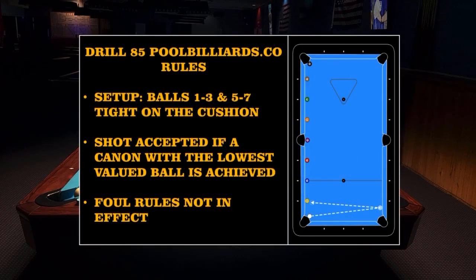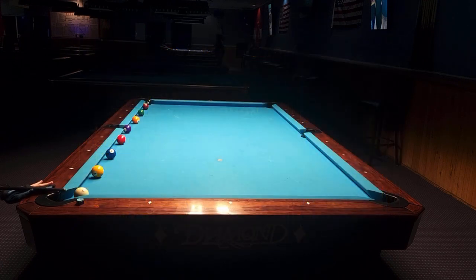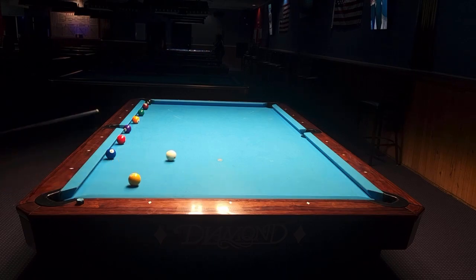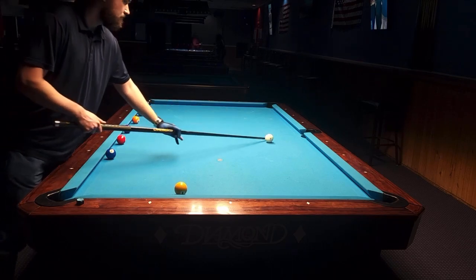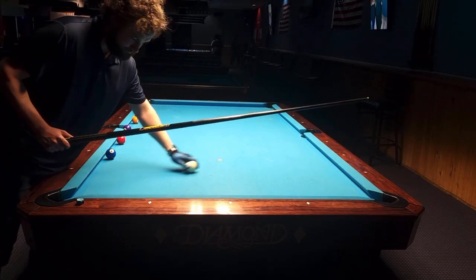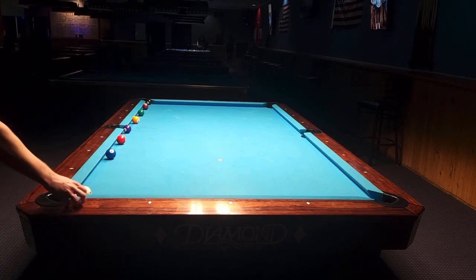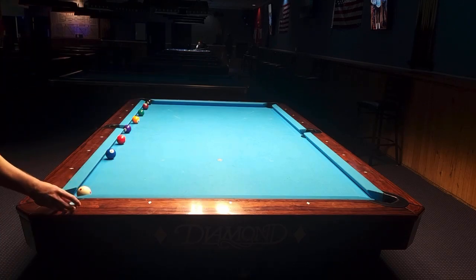Hello everyone, this is drill number 85 from pool billiards. The rules are relatively simple — it's a kicking drill. We try to kick the cue ball off the right cushion into ball number one, then from the same position into ball number two, then ball number three, and so on. Some of the foul rules are not in effect — for example, if I hit ball number one and scratch, that would not be considered a foul. If I hit ball number two and after the collision neither ball reaches the cushion or goes into a pocket, that's also not a foul.